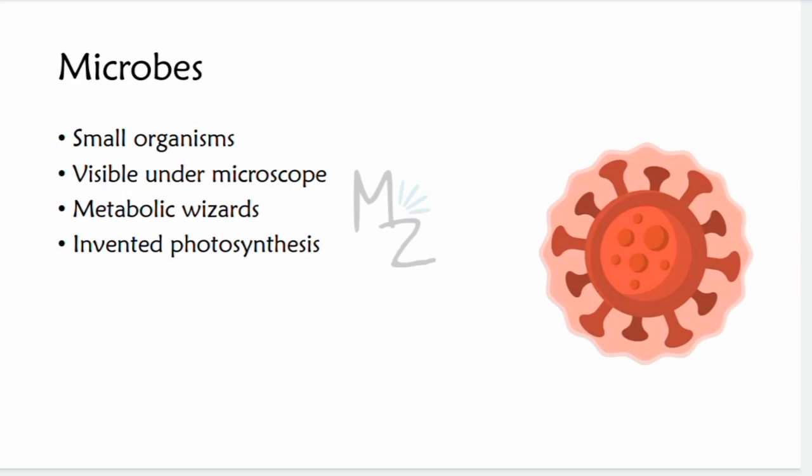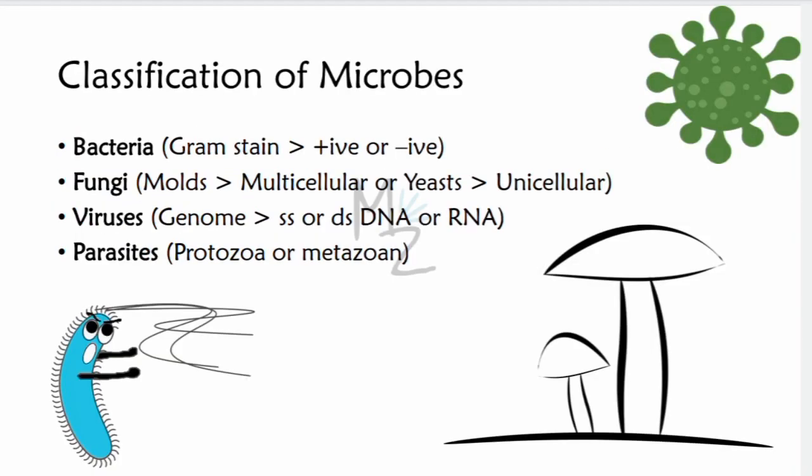Microbes are small organisms that are visible only under microscopes — that's why they're called microbes. 'Micro' appears both in 'microbe' and 'microscope.' They are metabolic wizards, and you know what — microbes actually invented photosynthesis.